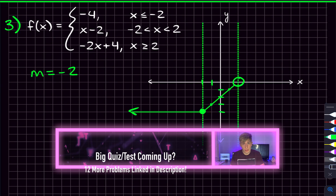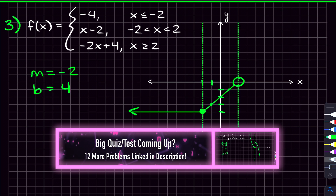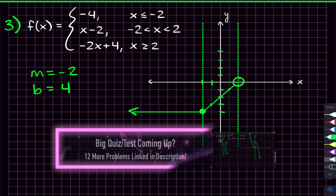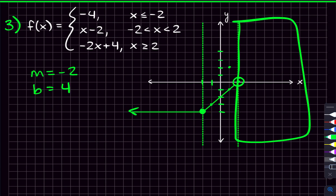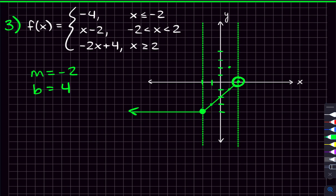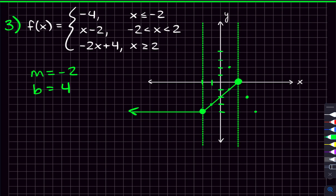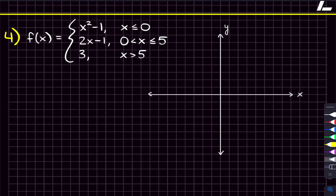The third function is negative two x plus four — slope negative two, y-intercept four. Starting at the y-intercept of four, we go down two and over one. This piece applies for x greater than or equal to two, so at x equals two we use a closed circle because of the 'greater than or equal to.' Continuing the slope down two over one, we connect the line and complete the third piecewise function.